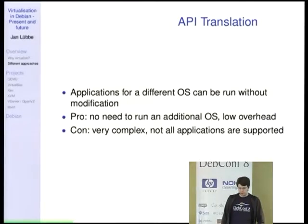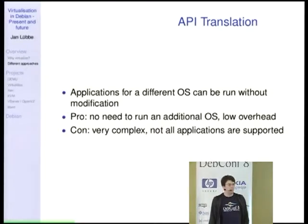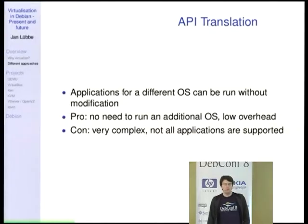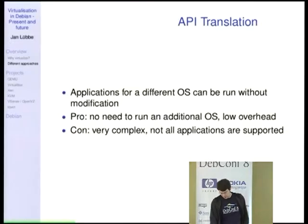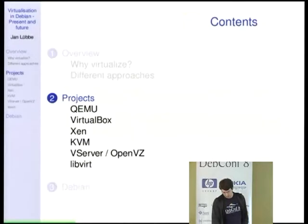API translation — we've seen Wine, which has taken a very long time to reach the current state, so you need to reimplement the full API which is really complex. But you don't need to run that OS once you've reimplemented that API, so it's low overhead.